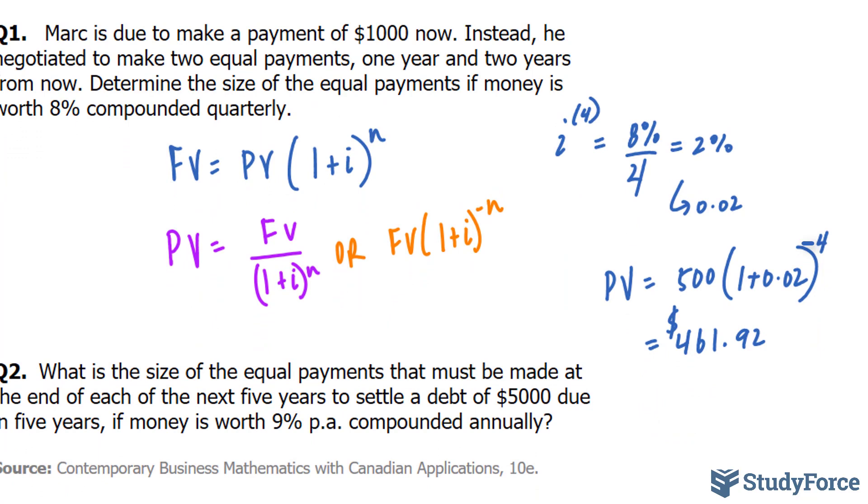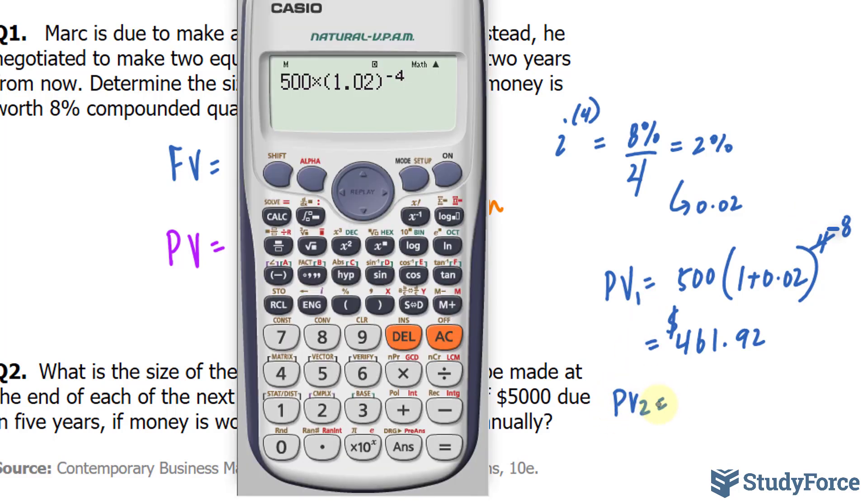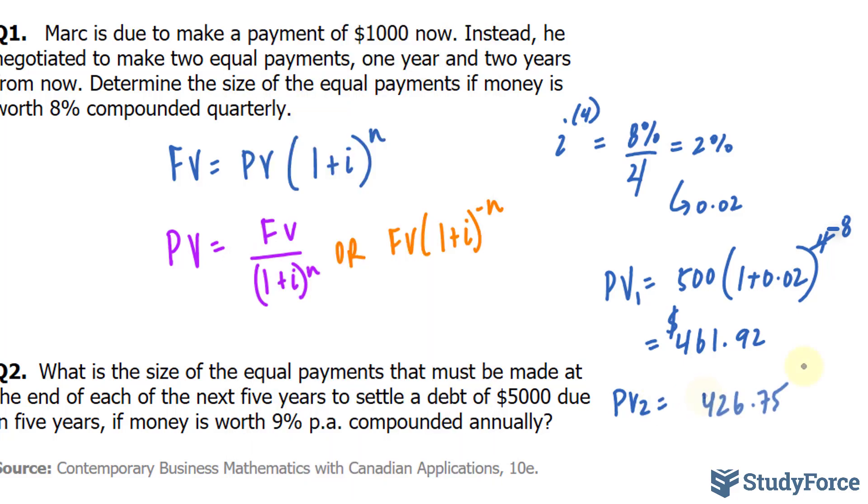If we do this calculation again, but instead with negative 8 for the second year, we get a second present value that is 426. If we add these two numbers up, if we sum them up, we do not get 1,000. In fact, we'll get something less than 1,000.